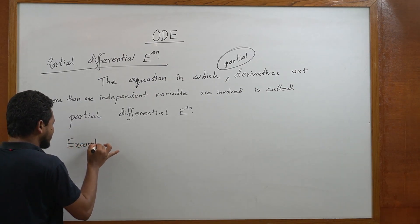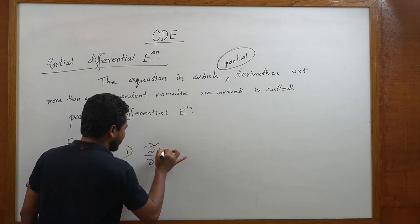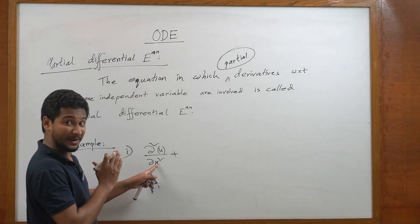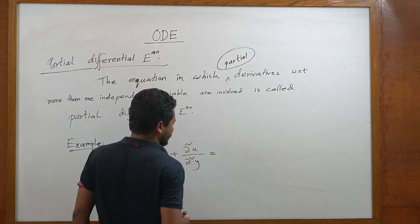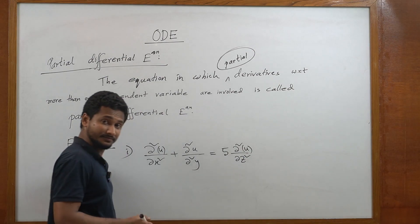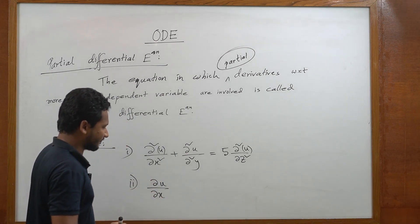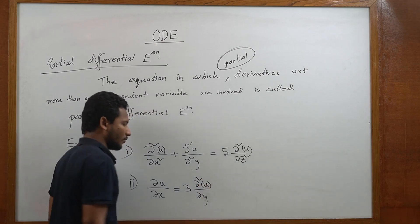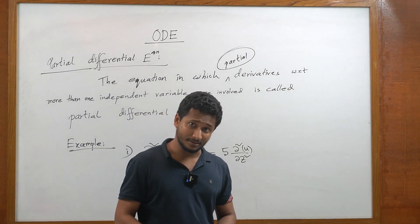Let's see examples of PDE. First example: ∂²u/∂x² + ∂²u/∂y² = 5 · ∂²u/∂z². Second example: ∂u/∂x = 3 · ∂²u/∂y². These kinds of examples are partial differential equations because there is a partial derivative operator.